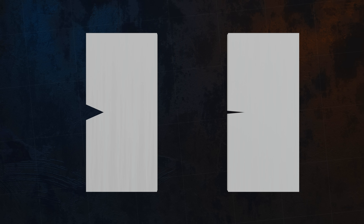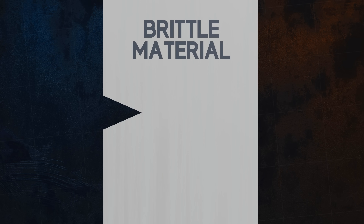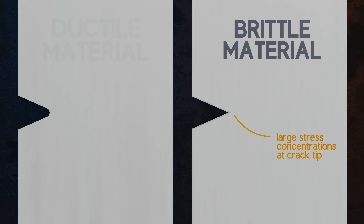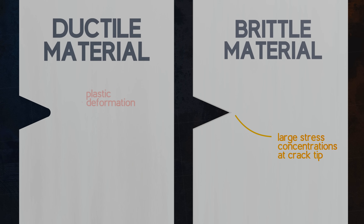The second factor is that in brittle materials, very little or no plastic deformation occurs to redistribute stresses at existing flaws. This means that large stress concentrations build up at the crack tip, resulting in fracture. In ductile materials, plastic deformation occurs, which relieves these localized stresses.